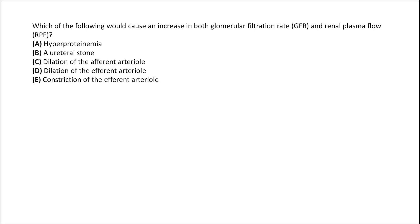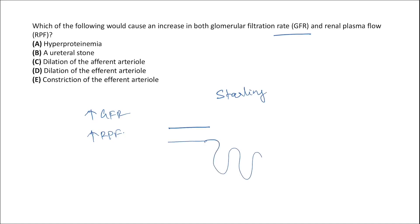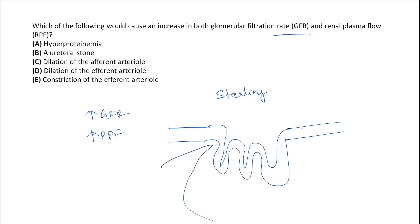The next question asks which of the following would cause an increase in both GFR and renal plasma flow. Basically they are testing understanding of the Starling forces. We have the afferent arteriole, the glomerulus, the efferent arteriole, capillaries, and the Bowman's capsule.